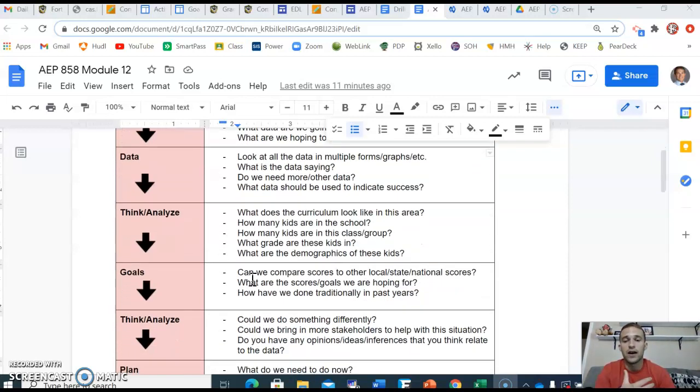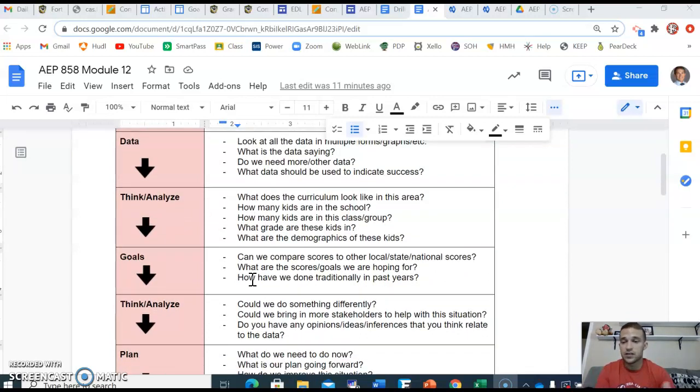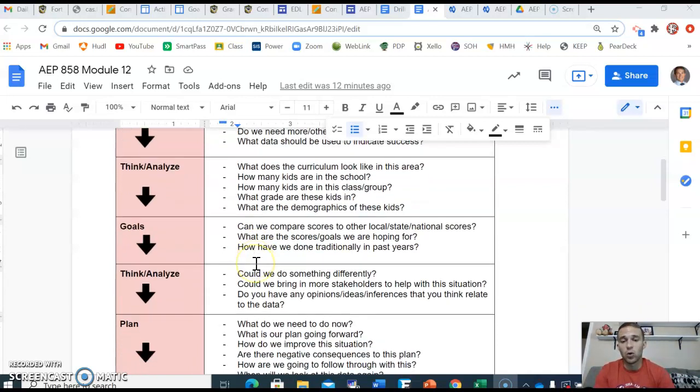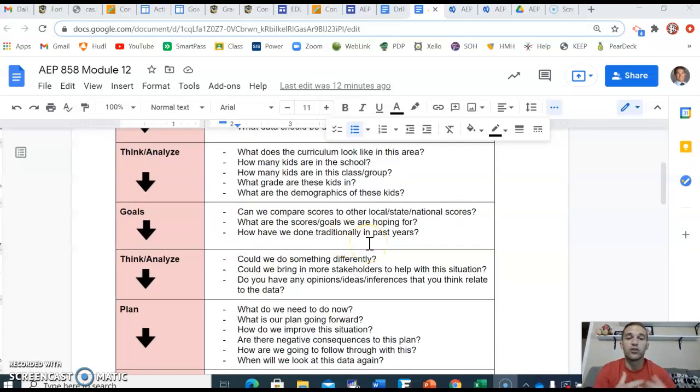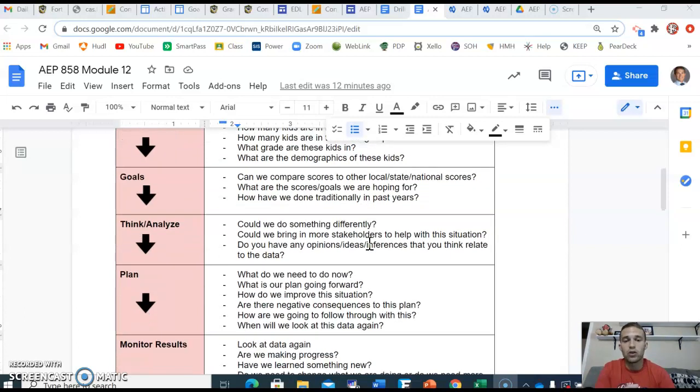What are we going to, how are we going to define success? And let's think, let's analyze. What does the curriculum look like in this area that we are examining? How many kids are in the school? What are the class settings? What grade? What demographics? So kind of think and analyze what's going on. Then let's set some goals right here. Can we compare scores to other classes, other schools, maybe state results, or even national results? And then what are the scores or the goals we are hoping for? What are those? How have we done traditionally in the past? What are the goals?